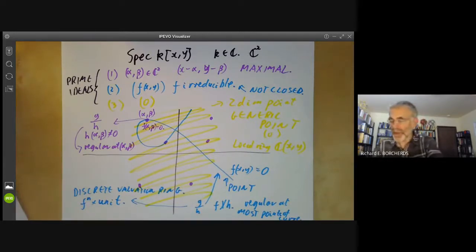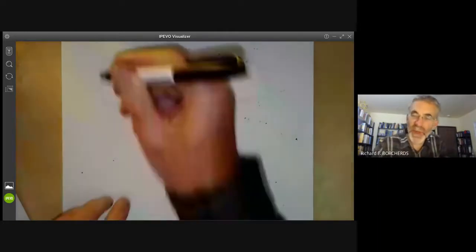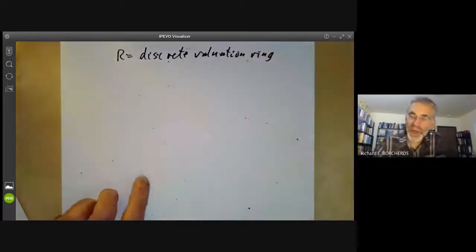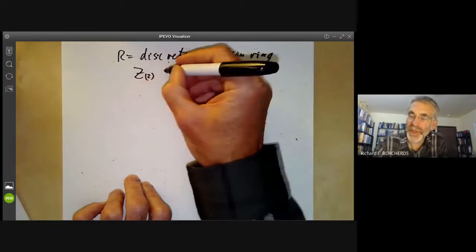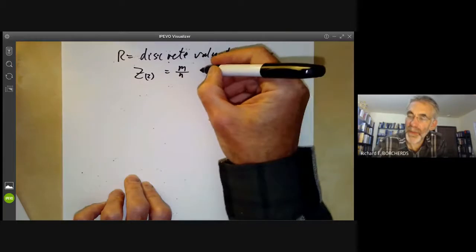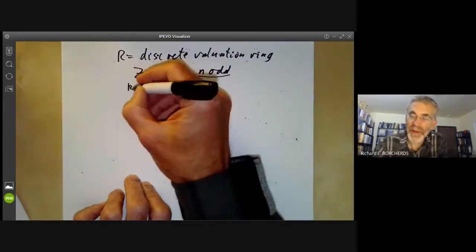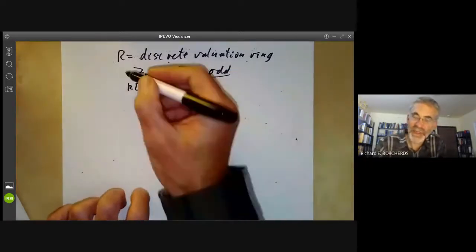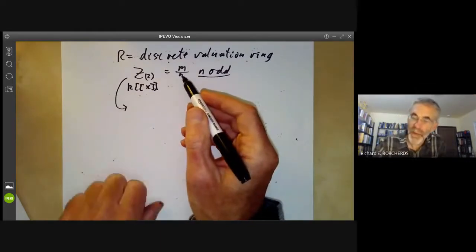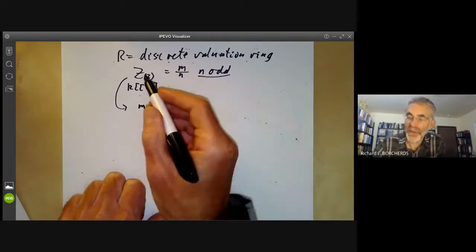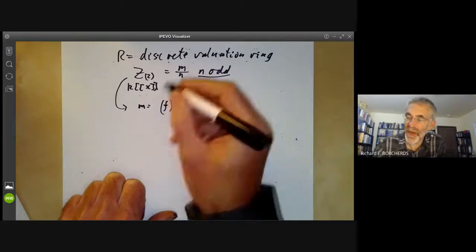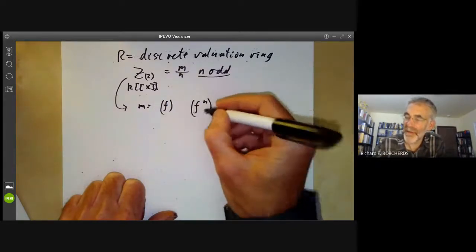We should also take a look at what the spectrum of a discrete valuation ring looks like. So the next example: let's take R to be a discrete valuation ring. If you can't remember what a discrete valuation ring is, let's just take, for example, the ring Z₍₂₎, which is all rational numbers m over n with n odd. Or you can take a ring of formal power series over a field — that's another example. The discrete valuation ring has a maximal ideal m, which in this case is all multiples of two, generated by some element f — in this case the prime two. The other ideals are just generated by powers of f, and we've also got the ideal zero.